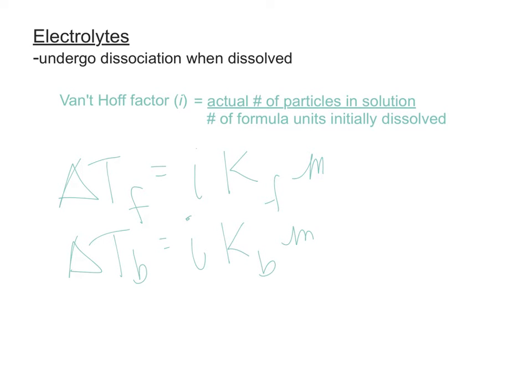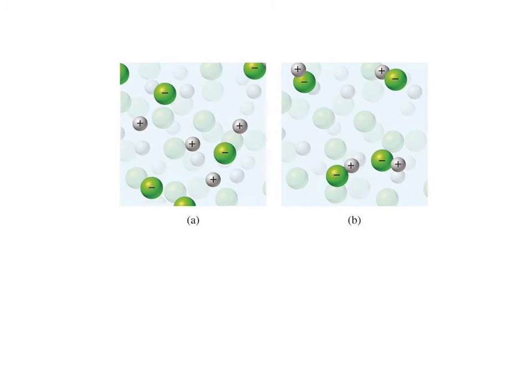And then the last one is the osmotic pressure is also going to be affected. You just have the Van't Hoff factor multiplied times the molarity, the gas constant, and the temperature. So as I mentioned, the Van't Hoff factor is going to increase the colligative property by a factor of two, say, if you have two parts in solution for every one part that you initially started with.